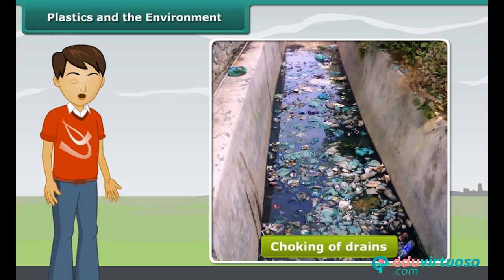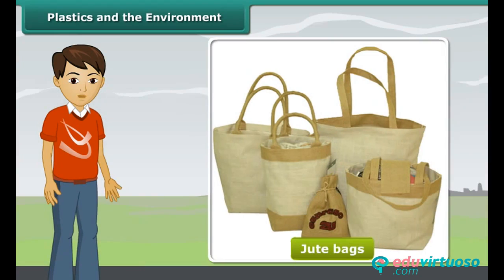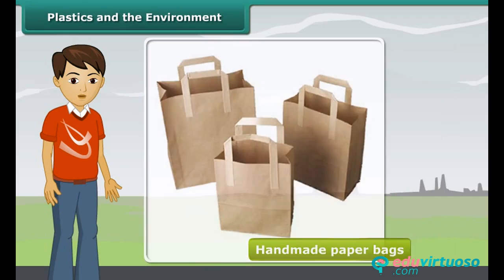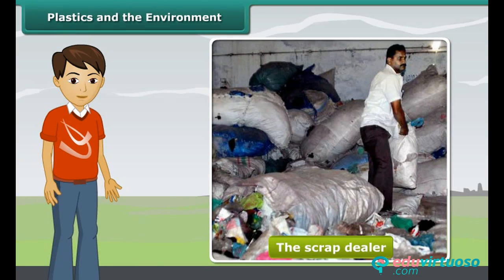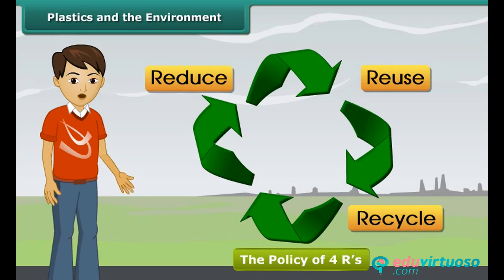There are a number of steps we can take as environmentally conscious citizens to safeguard our environment from the growing menace of plastics. We can replace plastic shopping bags with jute bags or handmade paper bags. Instead of littering, particularly on roads, we should put plastic objects in dustbins marked as non-biodegradable, segregating them from biodegradable wastes. Sell plastic scraps to the scrap dealer for recycling. Adopt the policy of 4 R's: reduce, reuse, recycle and recover.